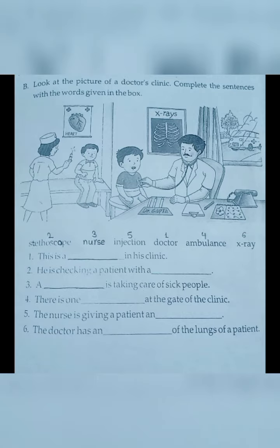This is a doctor in his clinic. Number two: he is checking a patient with a stethoscope. Number three: a nurse is taking care of sick people. Number four: there is one ambulance at the gate of the clinic. Number five: the nurse is giving a patient an injection. Number six: the doctor has an x-ray of the lungs of a patient.